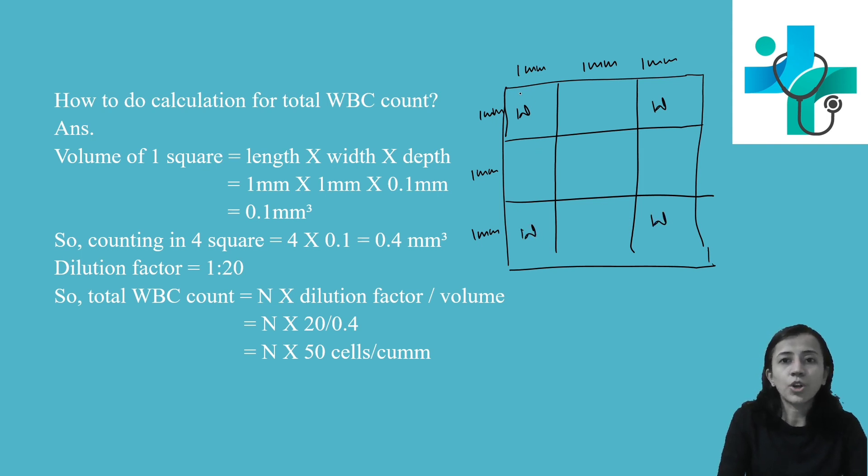Now, volume of one square - here you can see length is one millimeter and width is also one millimeter. When we place the coverslip here, there is 0.1 millimeter depth. So the volume would be length multiplied by width multiplied by depth, and that is 0.1 millimeter cube. This is the volume of one WBC counting square.